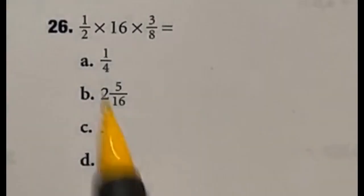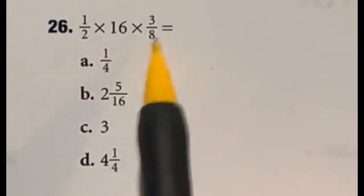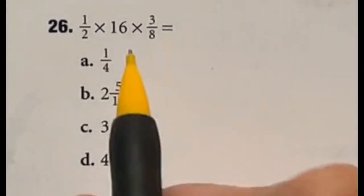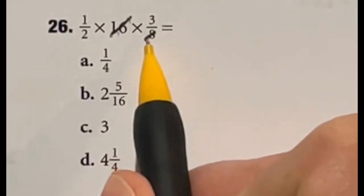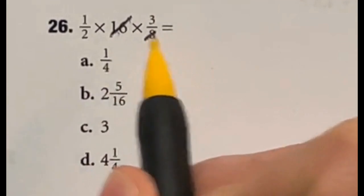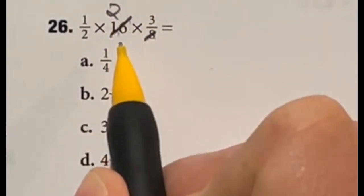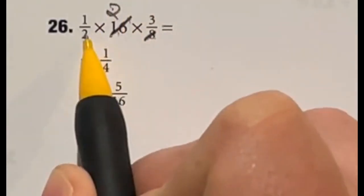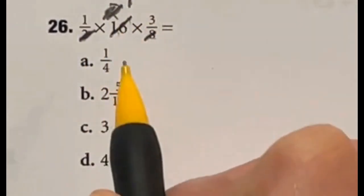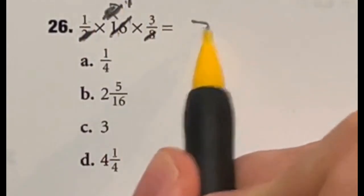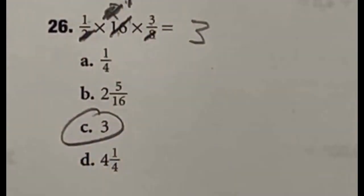So I'm actually going to do number 26 by canceling things out instead of just multiplying straight across. I know that 16 is divisible by eight so I'm going to cross those both out. 16 divided by eight is just two. I also know that two divided by two over here we'll just cancel that out to one. So really all I'm looking at here is one times one times three which is just three so our answer is C.